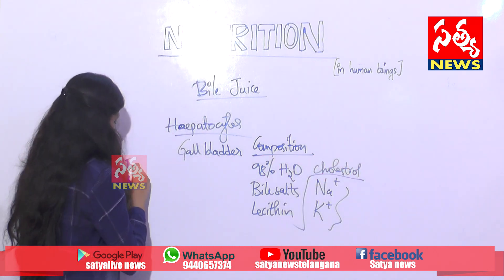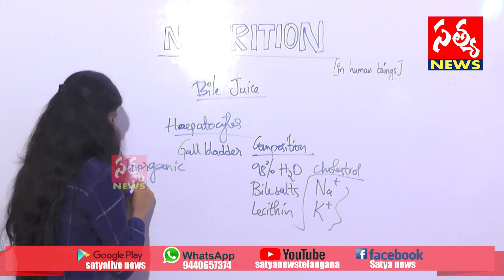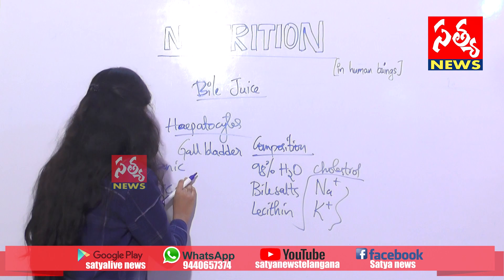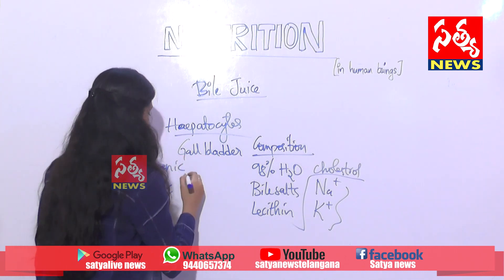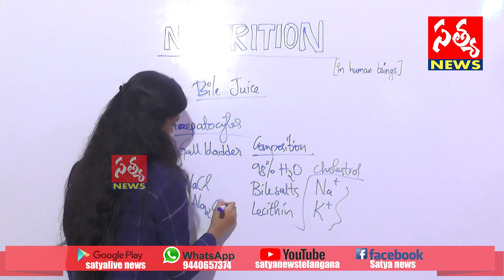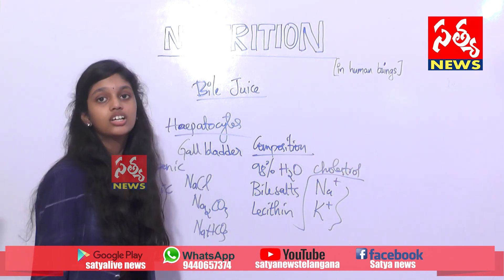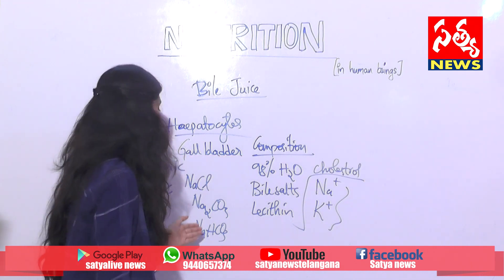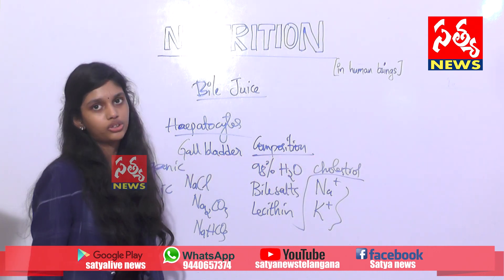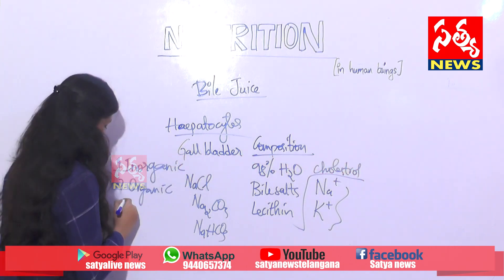The bile salts are of two types: inorganic bile salts and organic bile salts. The inorganic bile salts contain materials like NaCl, Na2CO3, and NaHCO3 - these inorganic salts neutralize the acidic medium of the stomach. The organic bile salts such as sodium taurocholate and sodium glycocholate help in the emulsification of fats.